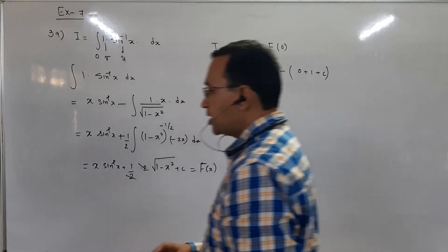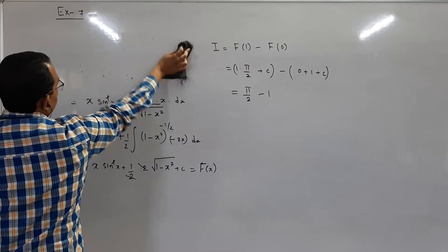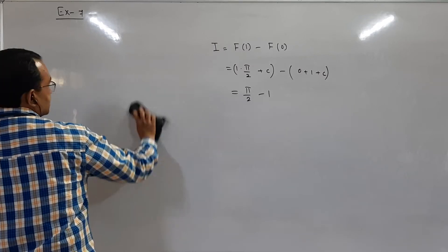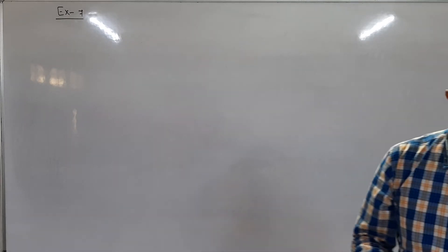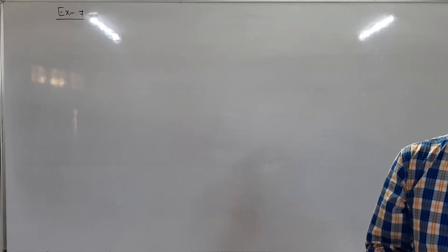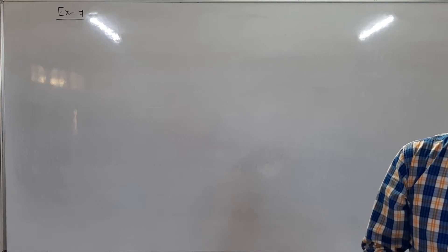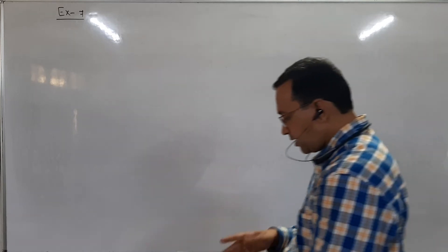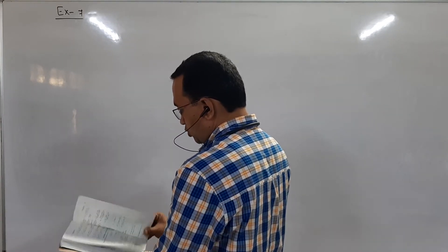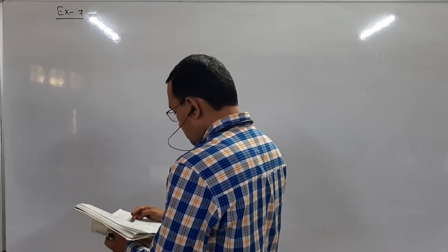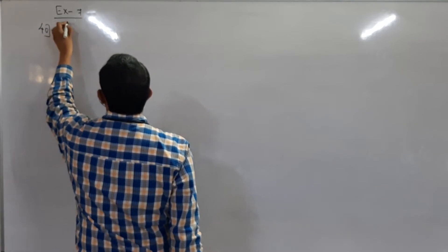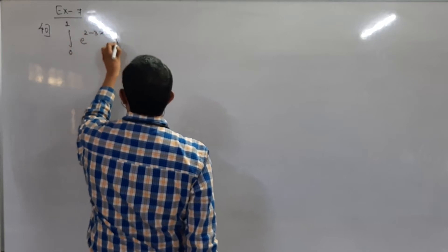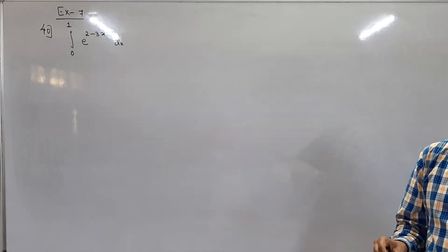Now sum number 40 is a definition of definite integral as a limit of sum. After a long, long time — at least I think a month — we are coming across the sum of definite integral as a limit of sum. Exercise 7.8. I hope all of you have remembered the basic formula. Our function is f(x) equals e raised to 2 minus 3x, and integration is 0 to 1 of e to the power (2 minus 3x) dx.